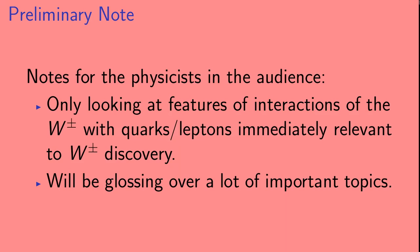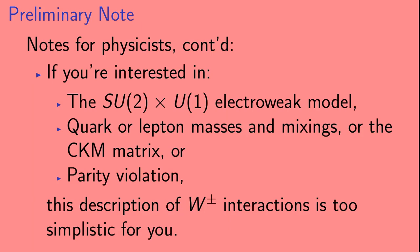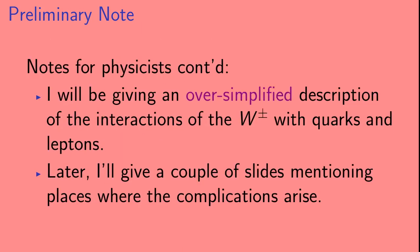So, for the physics students in the audience, in this video, we'll only be looking at those features of the interactions of the W with quarks and leptons that are immediately relevant to the W discovery, and we'll be glossing over a lot of important topics. In particular, if you're interested in the SU2 cross U1 electroweak model, or quark or lepton masses and mixings, or the CKM matrix, or parity violation, then the description that I give here of W interactions with the quarks and leptons will be too simplistic for you. I'll be giving an oversimplified description of the interactions of the W with quarks and leptons. Later, I'll give a couple of slides mentioning places where the complications arise.